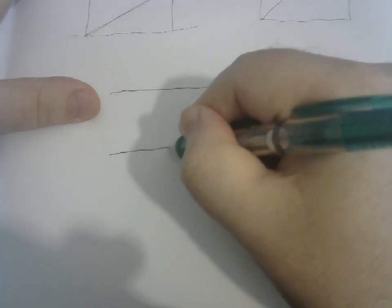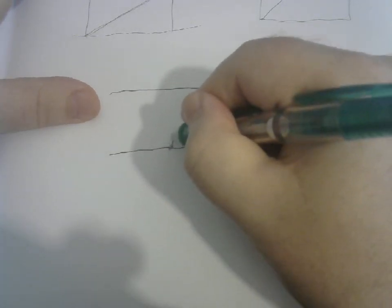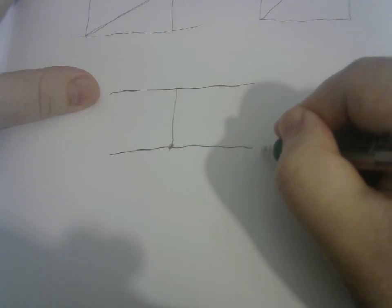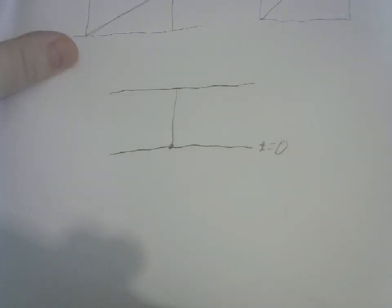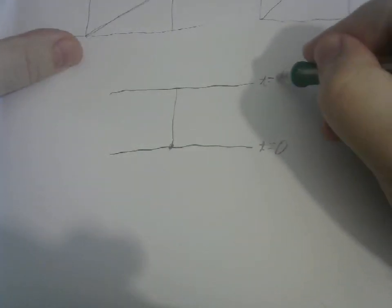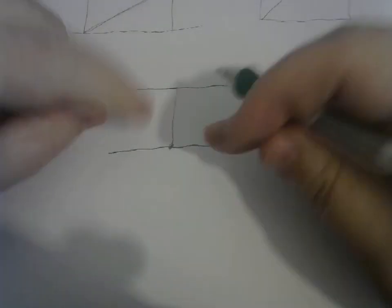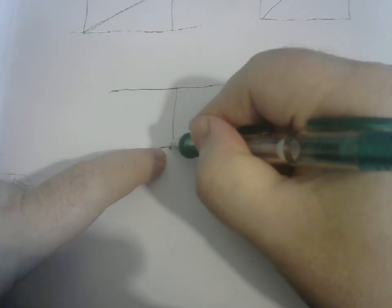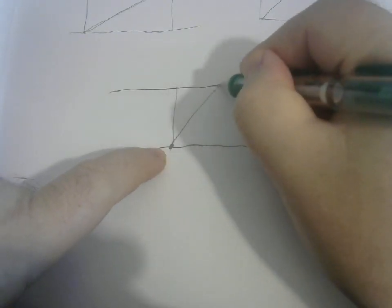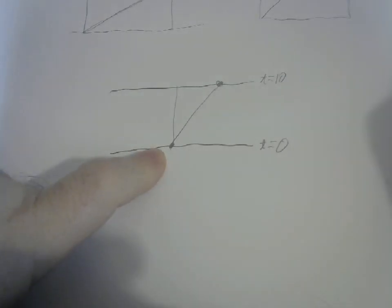If I am standing right here, later in time, like at t equals zero, then later in time I will be up here, let's say t equals 10. But if I accelerate to the right, I will be over here at t equals 10.